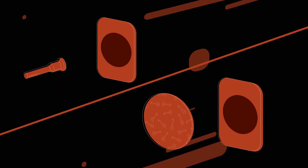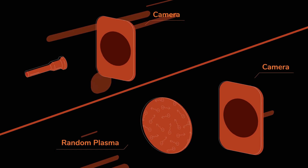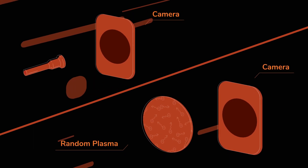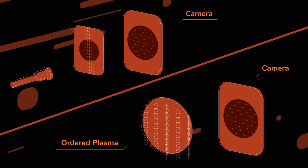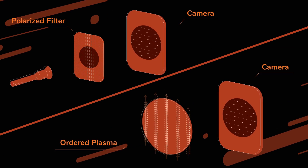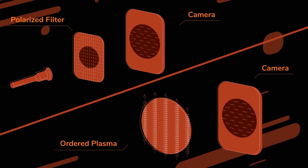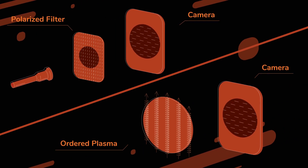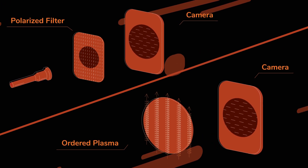In space, randomly moving hot gas or plasma emits unpolarized light, like the torch. Plasma threaded by a magnetic field is ordered and the emitted light is polarized. The magnetic field acts as a polarized filter.